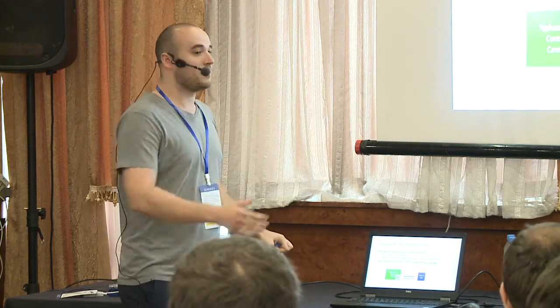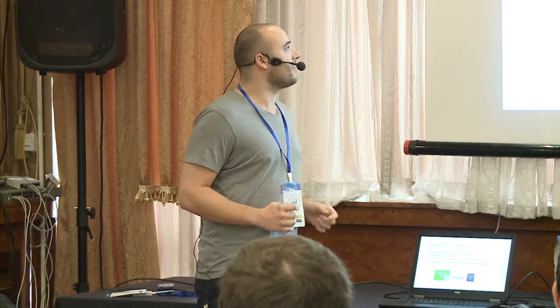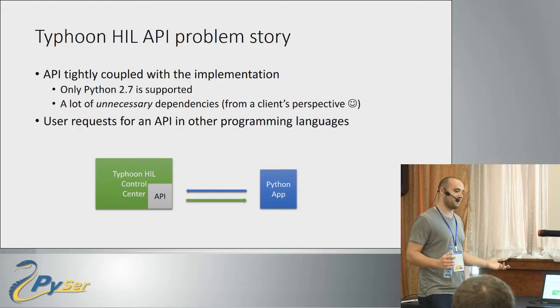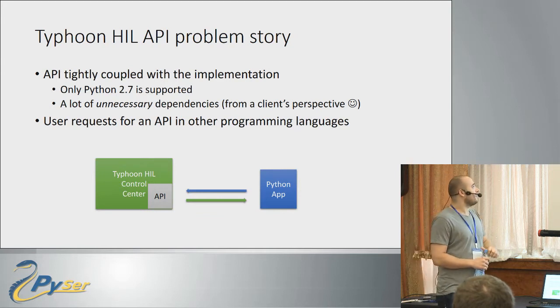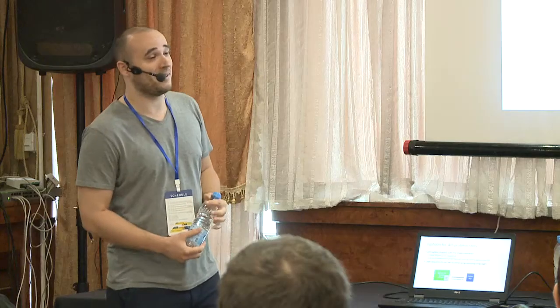As was mentioned, Python 2.7 will soon be phased out, so we have to change how our software works without affecting the clients' code. Also, one of the requests from users was: 'Your API is really good, but can we use it from a different programming language?' At the time we would say no, but now we have a solution.